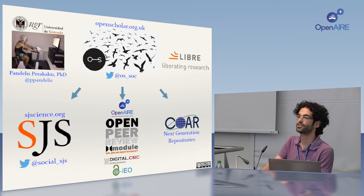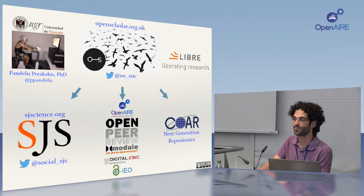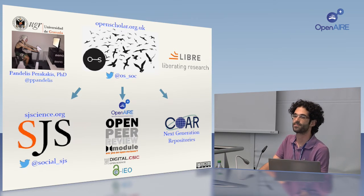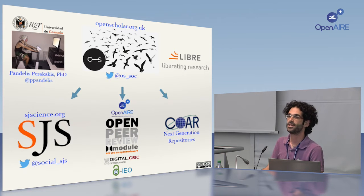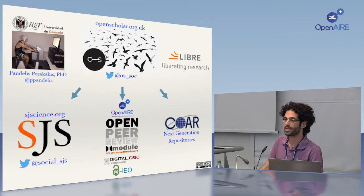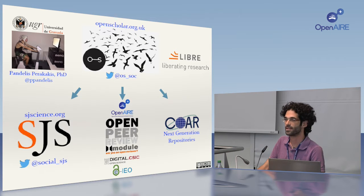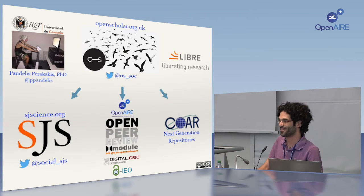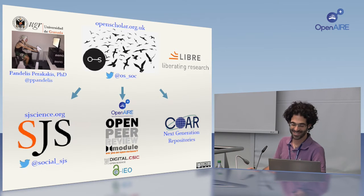We tried to propose the same idea to institutional repositories. We received funding from OpenAir last year and created a module for repository infrastructure so that repositories themselves become this meeting place for researchers to validate and assess each other's work. We also participate in a working group formed by the Confederation of Open Access Repositories, where we propose recommendations for the next generation of repositories so that every repository can become an evaluation platform.